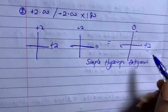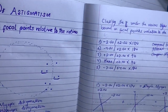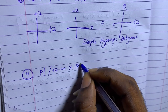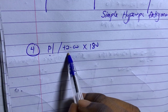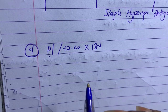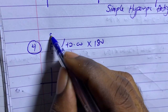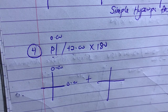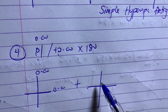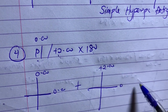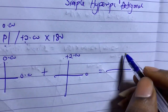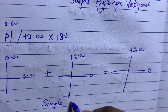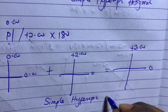Example four: plano combined with plus two axis 180. Don't assume it's simple hyperopic just because you see plano and plus — always draw the cross. Plano means zero, so I have zero on all meridians for the sphere. Combined with the cylinder plus two axis 180, the power is at 90. My final cross gives plus two at 90 and zero at 180. This is also simple hyperopic astigmatism.